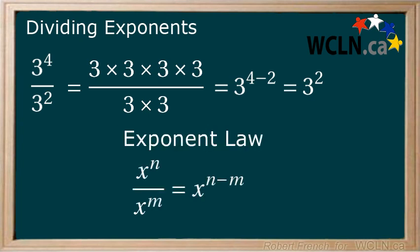x to the power of n divided by x to the power of m equals x to the power of n minus m.